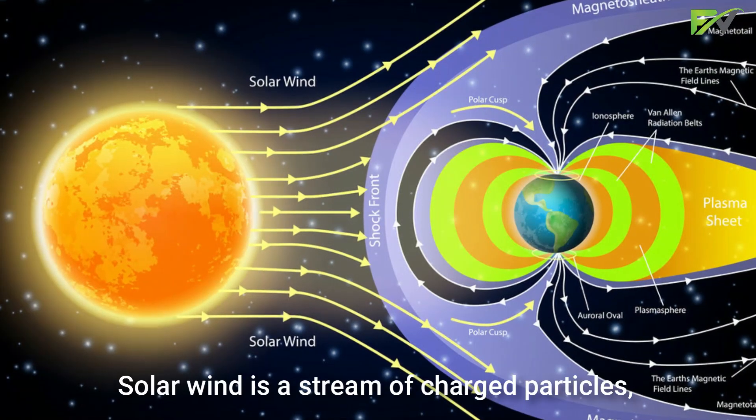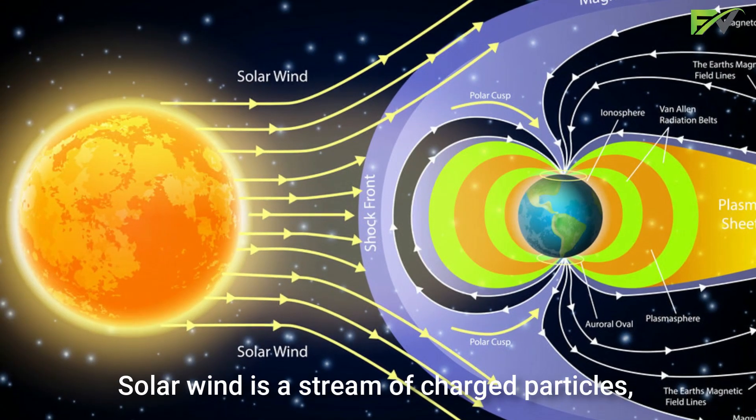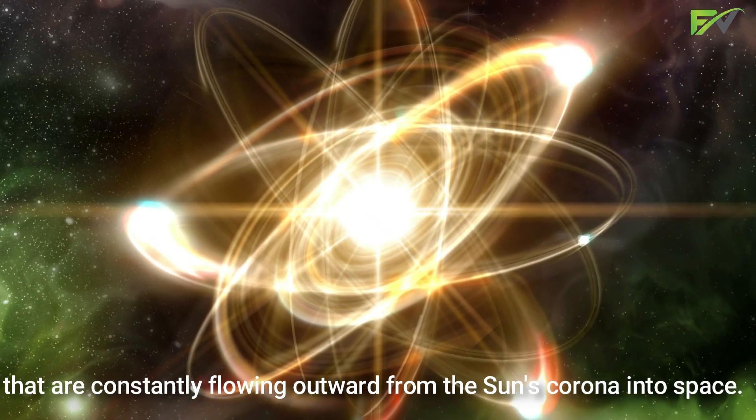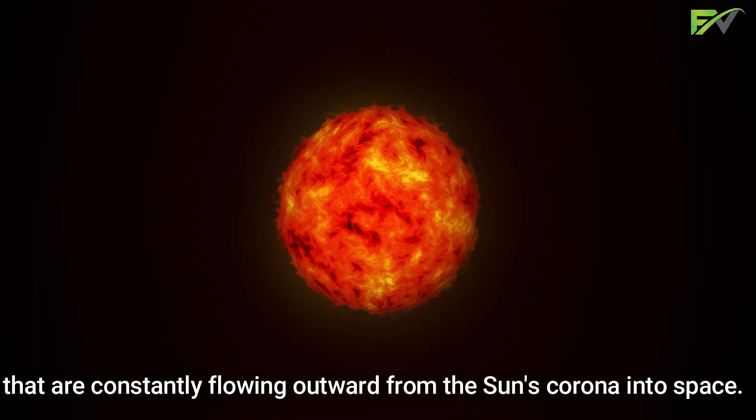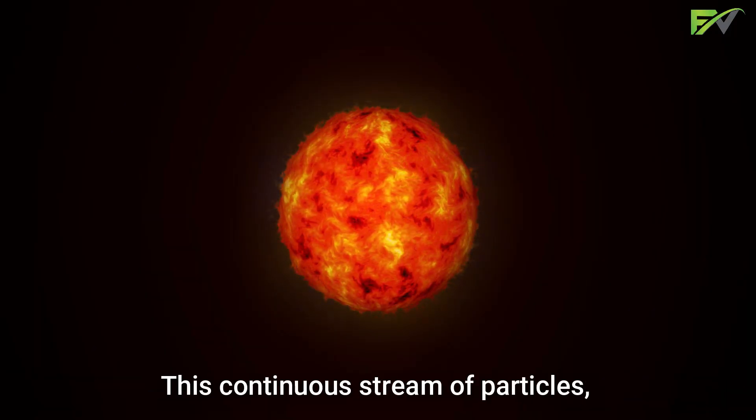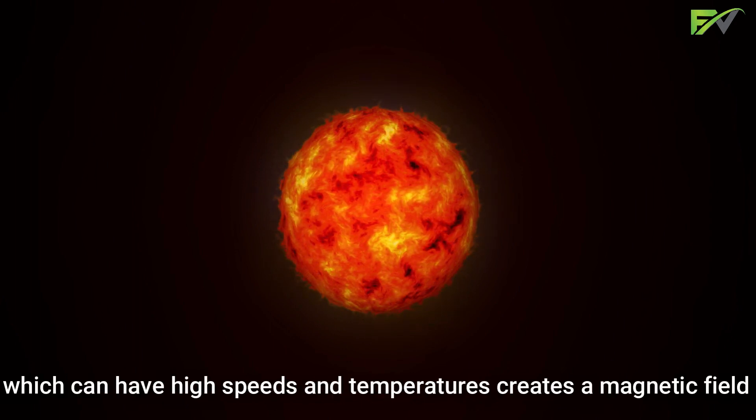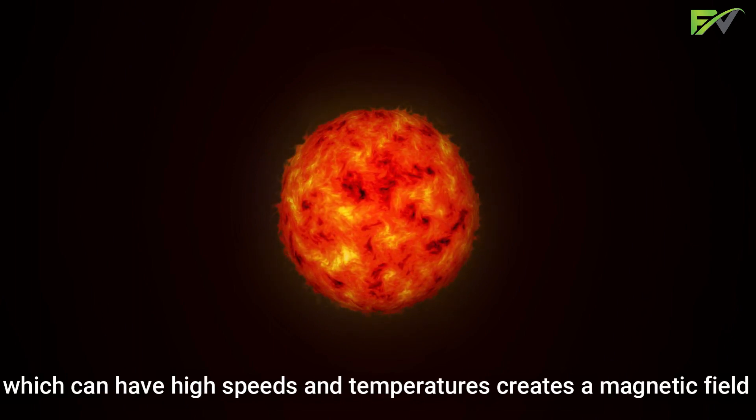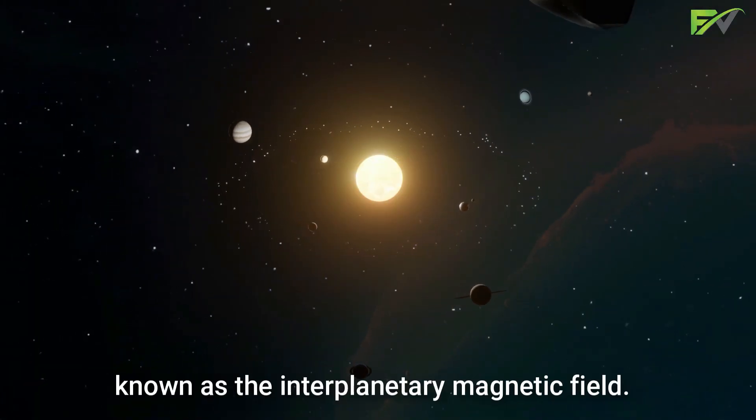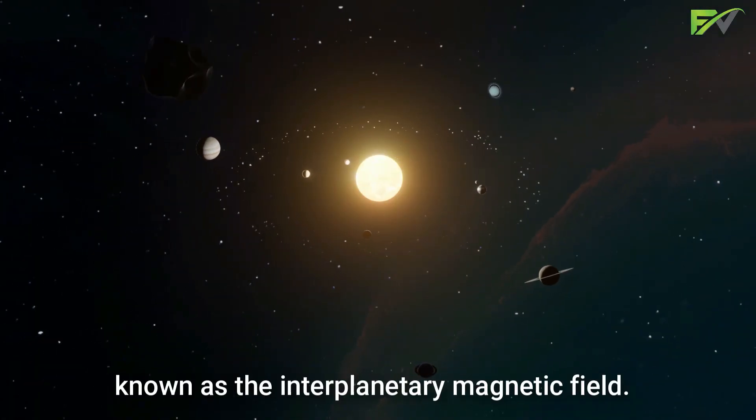Solar wind is a stream of charged particles, primarily consisting of electrons and protons, that are constantly flowing outward from the sun's corona into space. This continuous stream of particles, which can have high speeds and temperatures, creates a magnetic field that fills the entire solar system known as the interplanetary magnetic field.